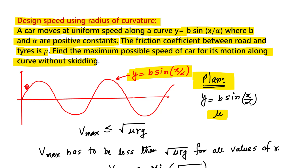If you remember, in the previous videos I explained that the maximum speed or maximum design speed is given by this formula: V_max is less than √(μRg).